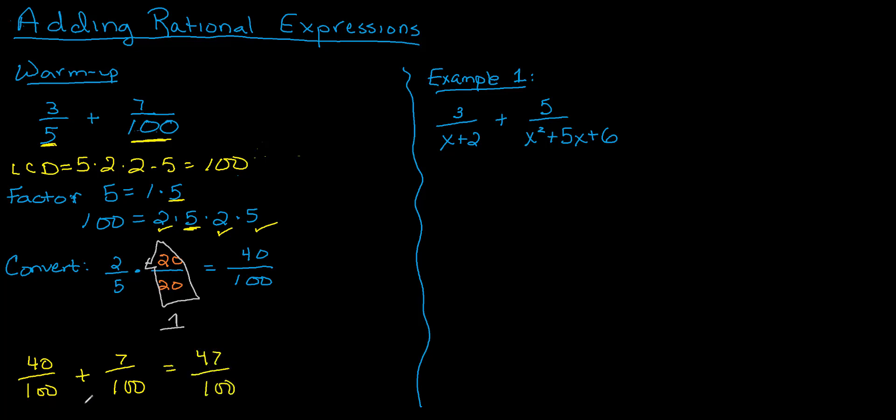I kept my same common denominator and added up the numerator. For those of you that like to think in terms of money, if you're working in a grocery store, 40 hundredths would be the same as 40 cents, 7 hundredths would be 7 cents, and you would add to get 47 cents.